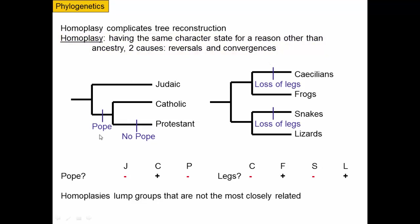Let's look at our phylogeny of religions. Consider the trait of having a pope. At one point in the history, the pope is acquired — this religion didn't have a pope and then it started to. There's a split, this lineage retained the pope, but in the other there was a reversal: they got rid of the pope again, and modern Protestant religions don't have a pope. So if you made a table — Judaism: no, Catholic: yes, Protestant: no — you'd group Judaism and Protestantism as more closely related than they are to Catholicism, which is incorrect. That error arises because there was a reversal: acquisition of a trait, then loss of that trait. The same thing happens biologically — traits can be gained and lost over evolutionary time.